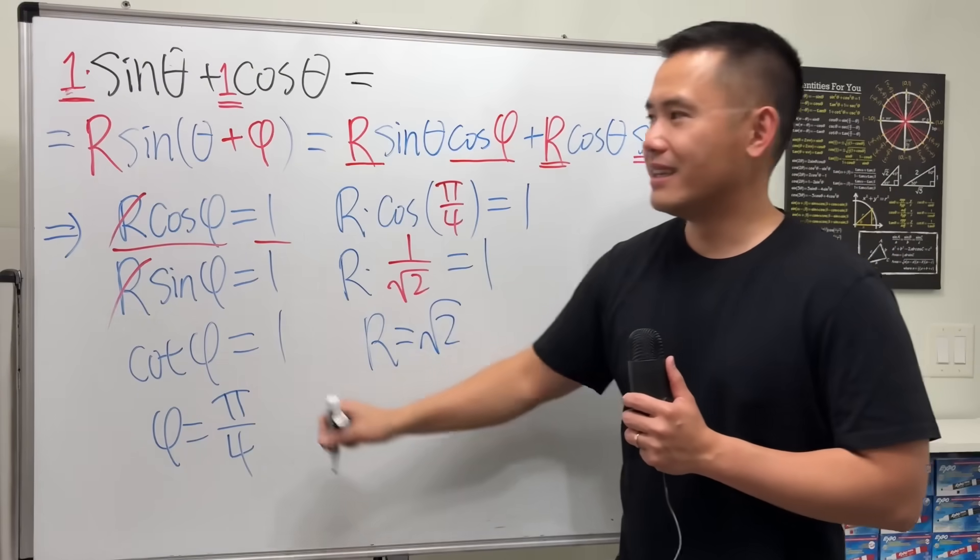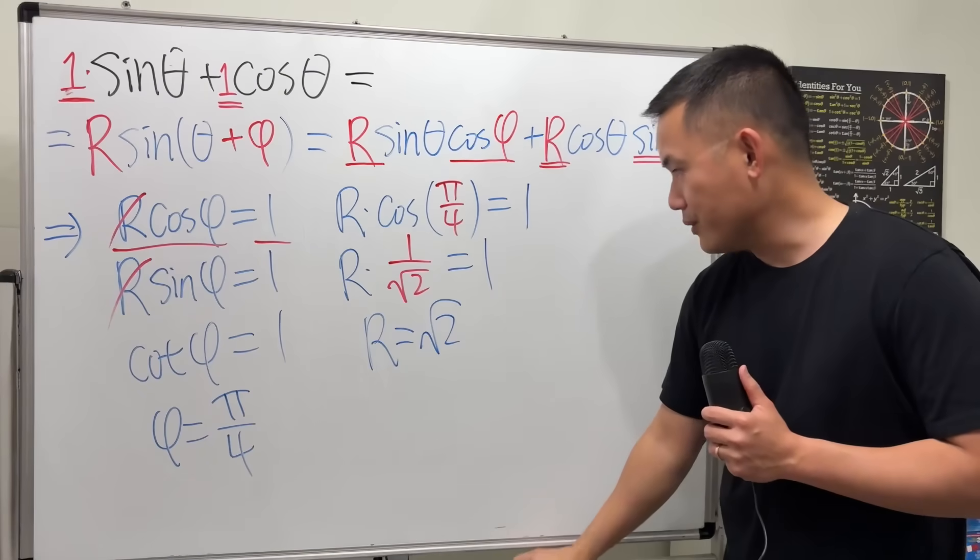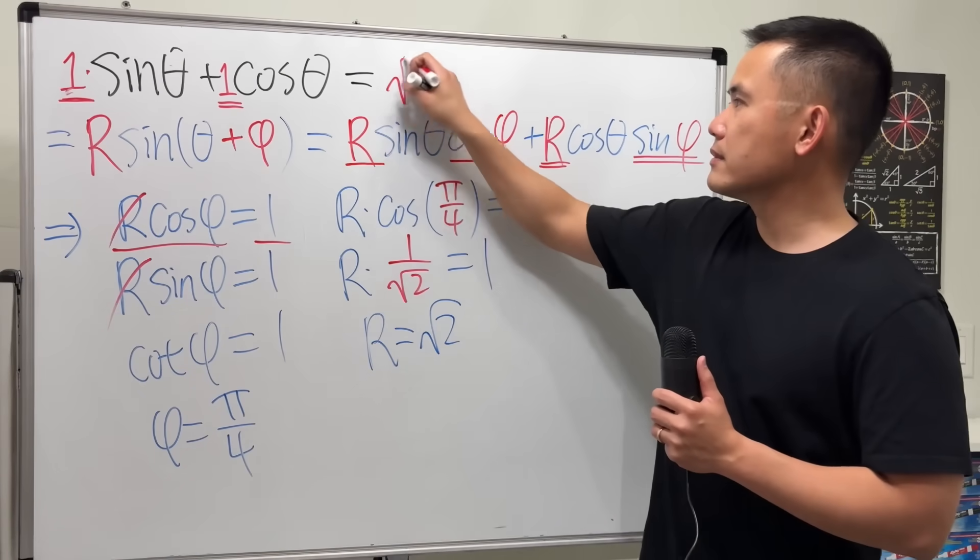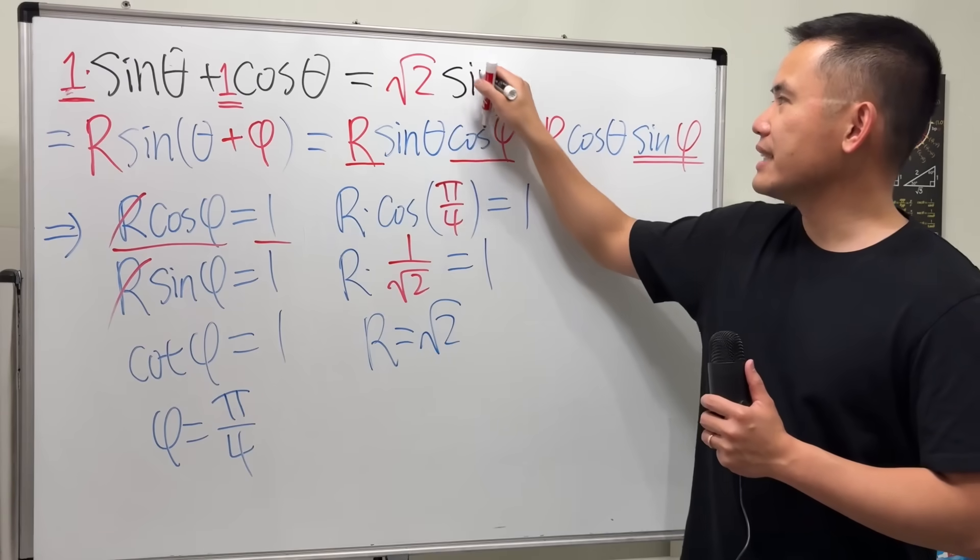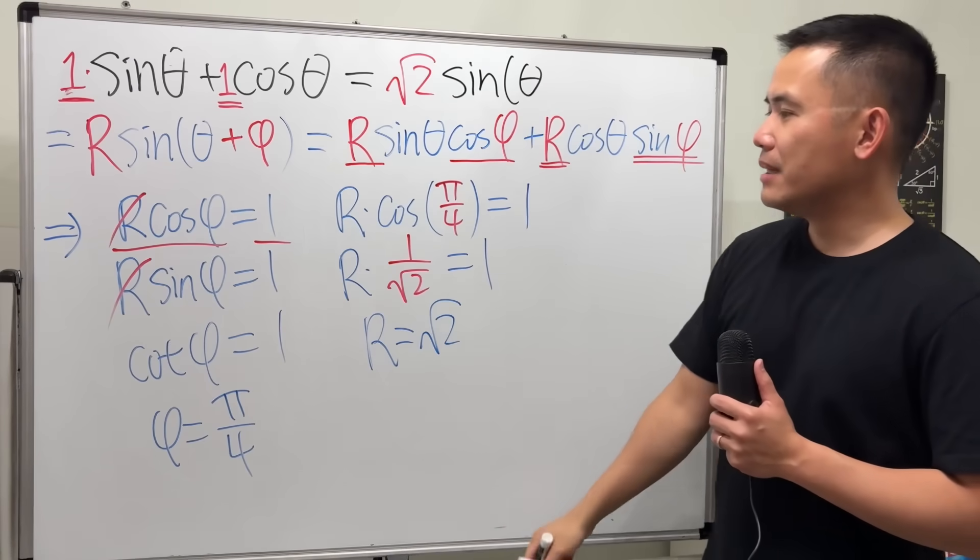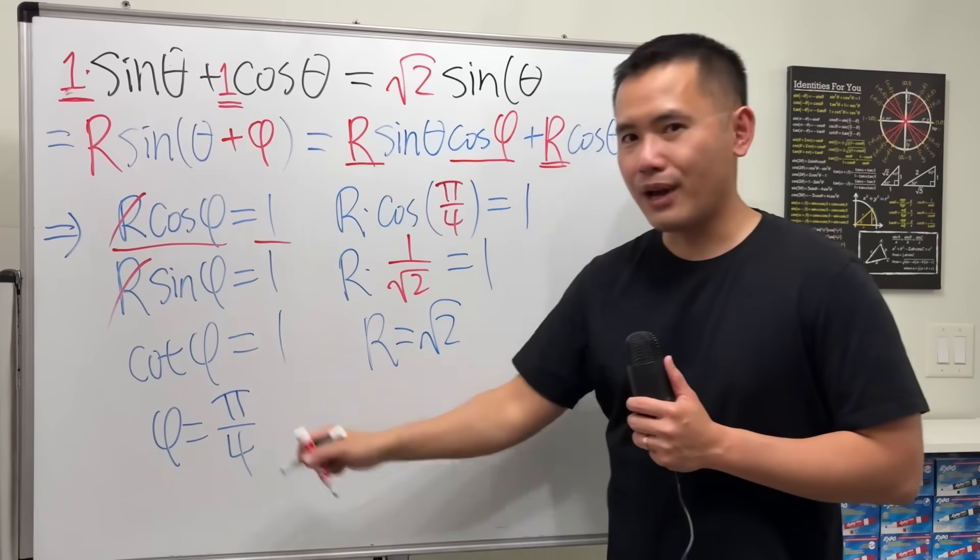So what we have done so far is that this is going to be the same as R, which is square root of two, times sine of theta plus phi, which is pi over four.